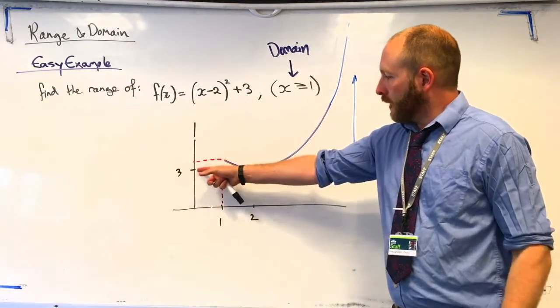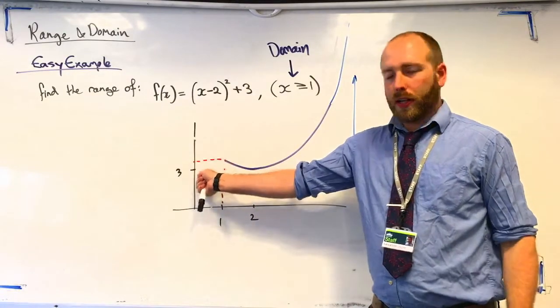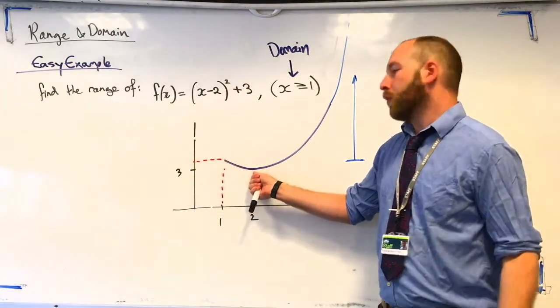If you look, we've already worked out that our minimum point is when y equals 3. So, this is going to be greater than 3 because it's obviously not the minimum point.